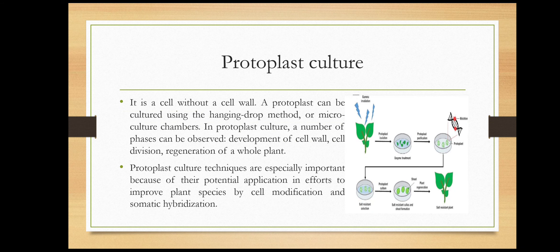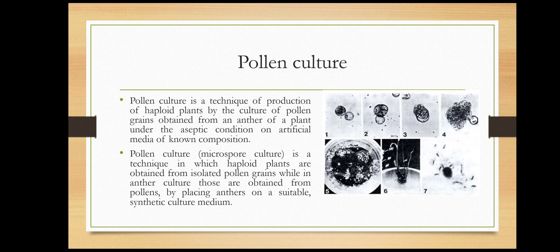The next type is pollen culture. Pollen culture is a technique for the production of haploid plants by the culture of pollen grains obtained from an anther of a plant under aseptic conditions on artificial media of known composition. Pollen culture is a technique in which haploid plants are obtained from isolated pollen grains, while in anther culture those are obtained from pollens by placing the anther on a suitable synthetic culture media.